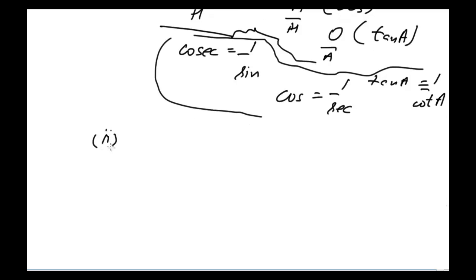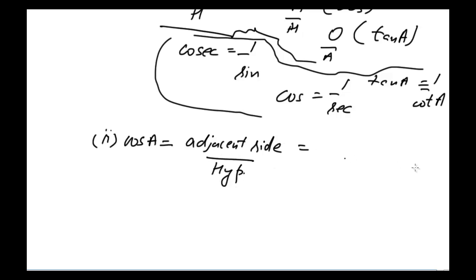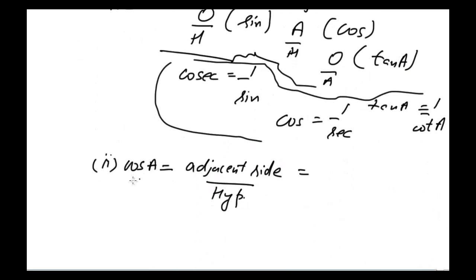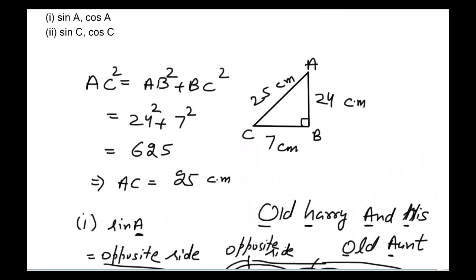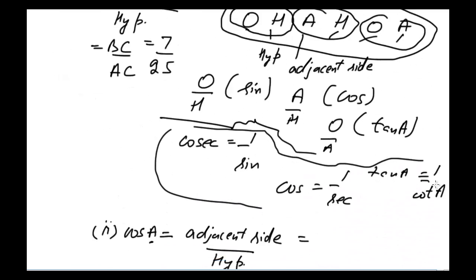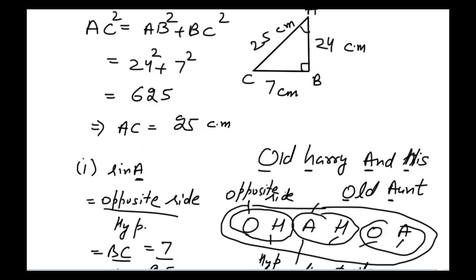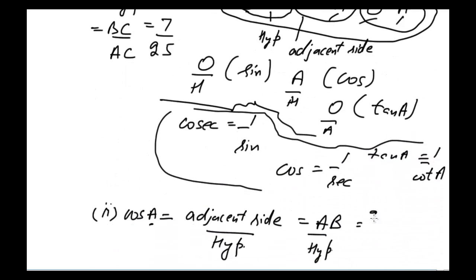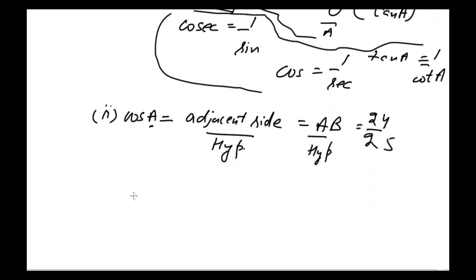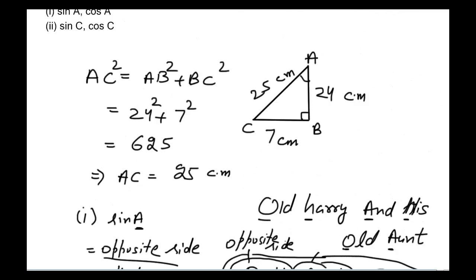Now let's find cos A. The formula for cosine is adjacent side divided by hypotenuse. The adjacent side to angle A is AB, and the hypotenuse is AC. So cos A = AB / AC = 24 / 25.